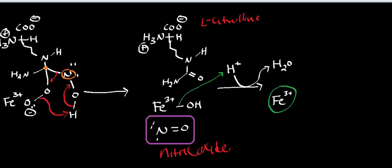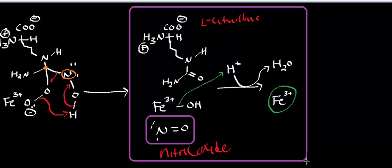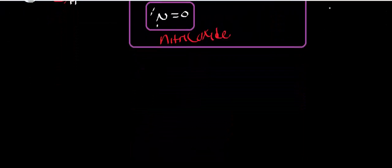These are the final products of nitric oxide synthase. Nitric oxide can be used to protect against pathogens, to communicate within the synapse of neurons, and to dilate blood vessels. Those are its main functions. But there are also some problems that can arise with nitric oxide.